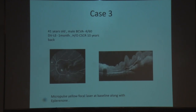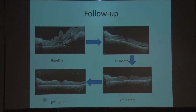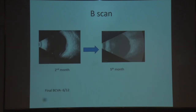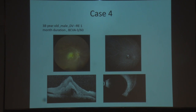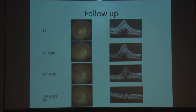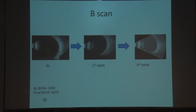Case 3: 41-year-old male, BCVA 4/60, left eye defective vision of one month, history of CSCR treated with laser 10 years prior. Micropulse laser was combined with eplerenone from baseline, with complete resolution at five months and final BCVA improving to 6/12. Case 4: 38-year-old male, right eye defective vision of one month, BCVA 3/60, dense subretinal fibrin at fovea with two leaks and inferior bullous detachment. Gradual reduction of fibrin and SRF occurred, though residual subfoveal fibrin remained; vision improved from 3/60 to 6/24, and inferior bullous detachment resolved completely at three months.